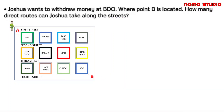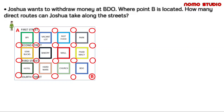First, we need to mark all the intersections on the map. Starting from point A, if Joshua wishes to withdraw money at BDO through this way, that is one route. If he wanted to go through this way here, this is route 2. This is also another route, and also this one here. If Joshua wanted to go downwards, that is also another route — this one, and also another one. So we already labelled our intersections, for route 1.